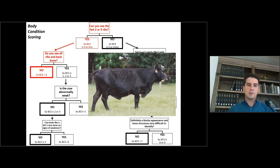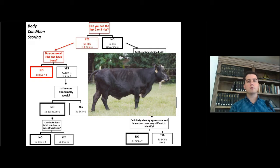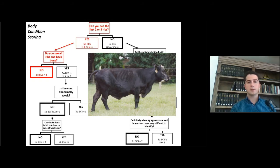But this is something you can worry about once you have more experience and practice. Then you will be able to score your cows on a smaller unit increment — for example, every half of a point instead of using a 1-point increment. That comes with practice.